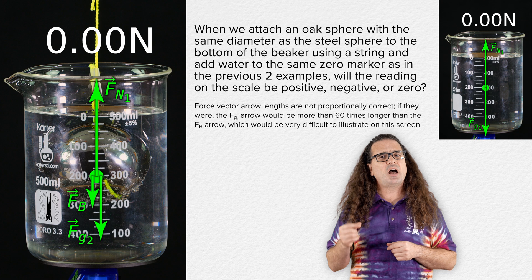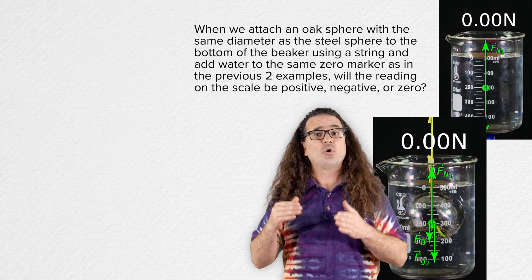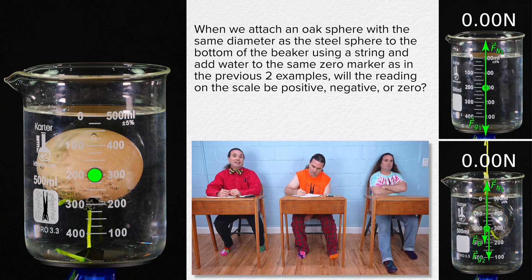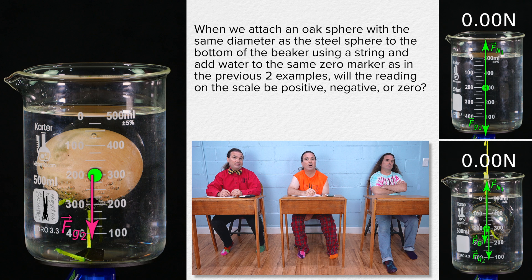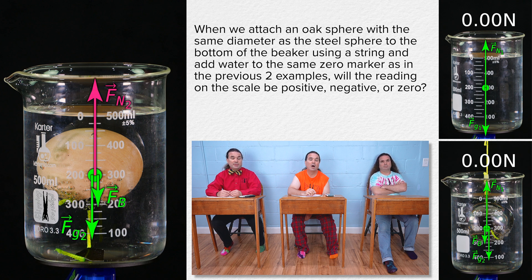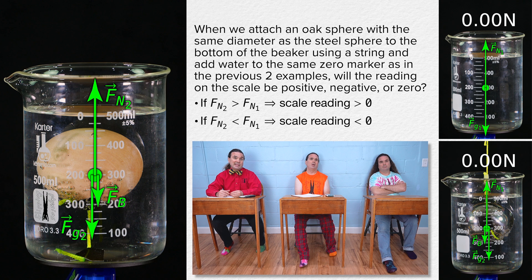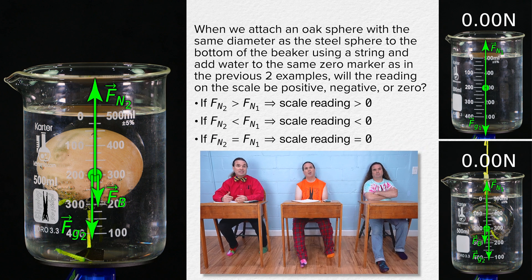Billy, please give us the free body diagram of the forces acting on the water and beaker with the oak sphere submerged in the water and held down to the bottom of the beaker using the string. The force of gravity is down, still with a subscript of two because there is the same amount of water in the beaker with the oak sphere as with the steel sphere. The buoyant force is down, and has the same magnitude as before because the oak sphere and steel sphere have the same volume. And there is an upward force normal with a subscript of two. The question is, how does the magnitude of force normal two compare to force normal one? If force normal two is more than force normal one, the reading on the scale will be positive. If force normal two is less than force normal one, then the reading on the scale will be negative. And if force normal two is the same as force normal one, then the reading on the scale will be zero. Exactly — please figure it out, keep drawing the free body diagram.